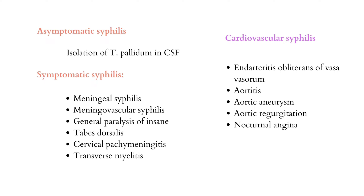That is called asymptomatic neurosyphilis. In symptomatic neurosyphilis we find neurological signs like meningeal syphilis, which occurs in 1–2 years and affects the brain or spinal cord. Symptoms include headache, nausea, vomiting, neck stiffness, cranial nerve palsy, and seizures.